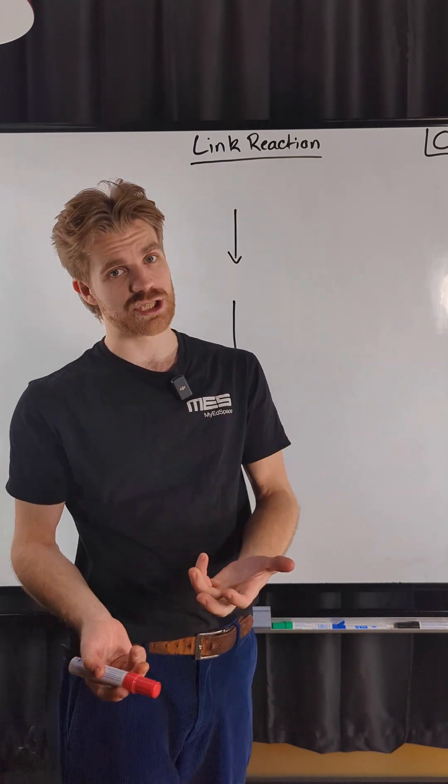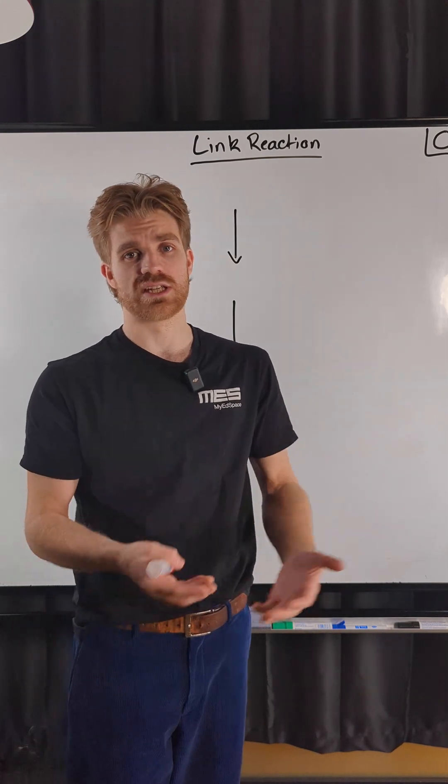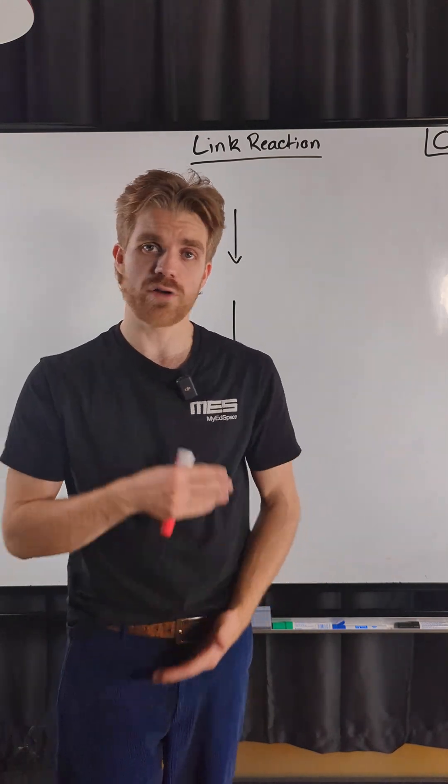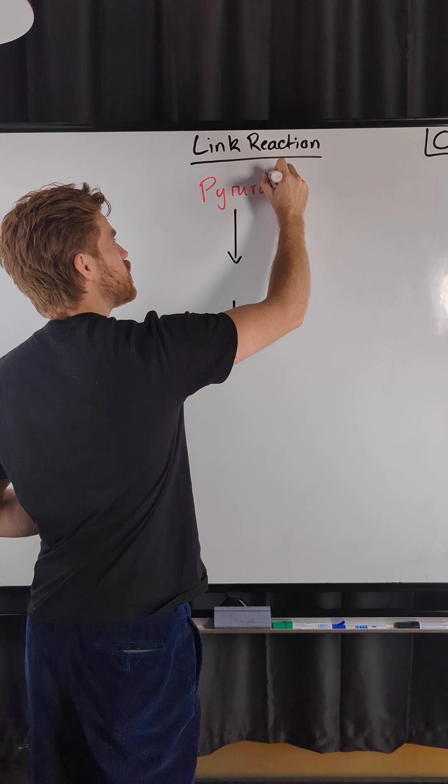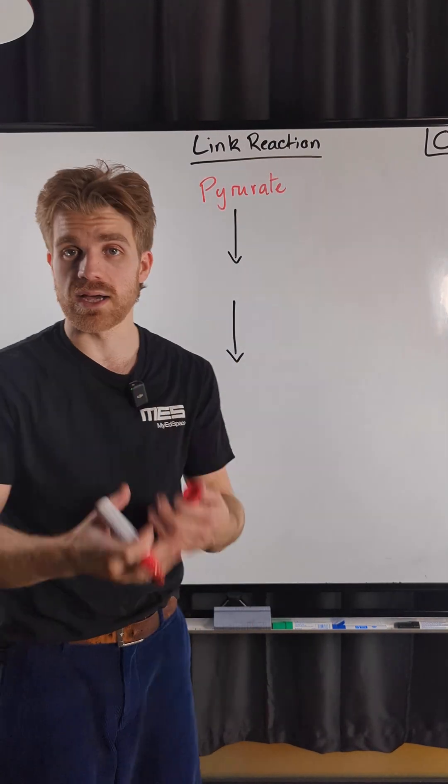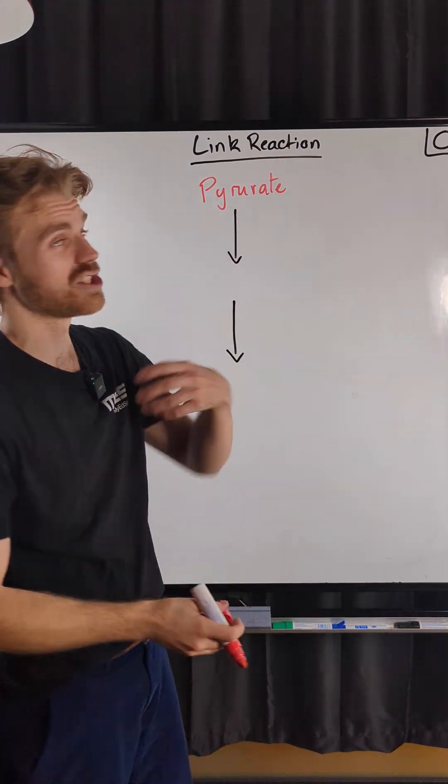Next we've got our link reaction. So the final product of glycolysis was pyruvate and the pyruvate is then going to go into our link reaction, but our pyruvate has now got to move its way into the mitochondria because the link reaction is taking place in the mitochondrial matrix.